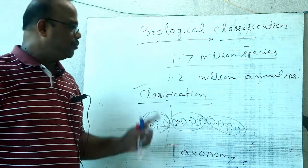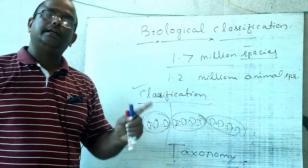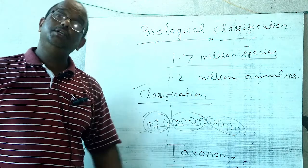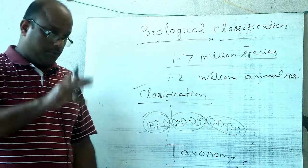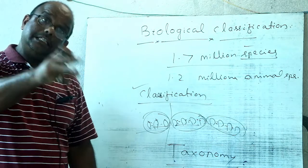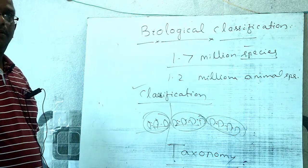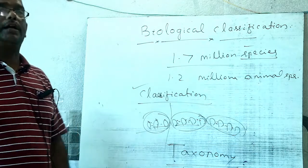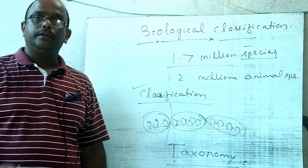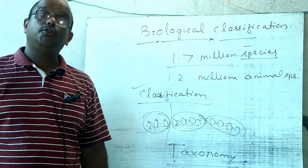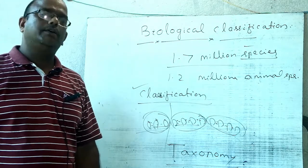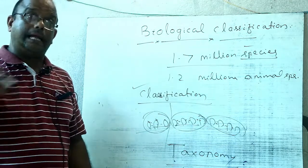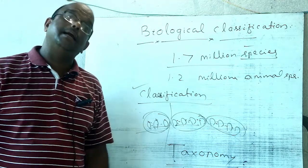Taxonomy deals with the study of nomenclature, identification, and classification of organisms. There is also chemo-taxonomy, which deals with the classification of organisms on the basis of their chemical constituents.